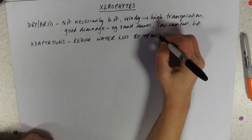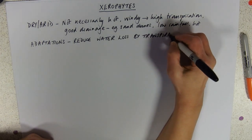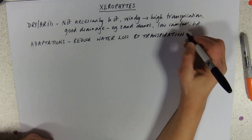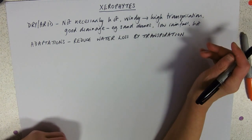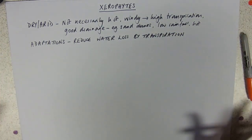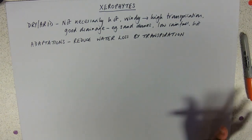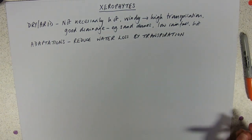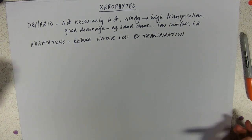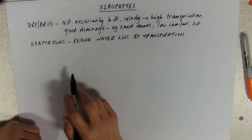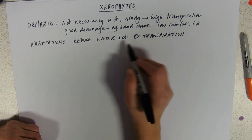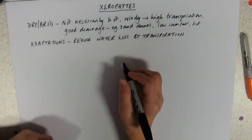In addition to that they may have root adaptations that enable them to take up a lot of water. They might have very shallow, very spread-out roots with a big surface area to get any surface water that's falling, or they might have very deep tap roots to access groundwater from below the ground. But we're particularly concerned with their leaf adaptations to reduce water loss by transpiration.